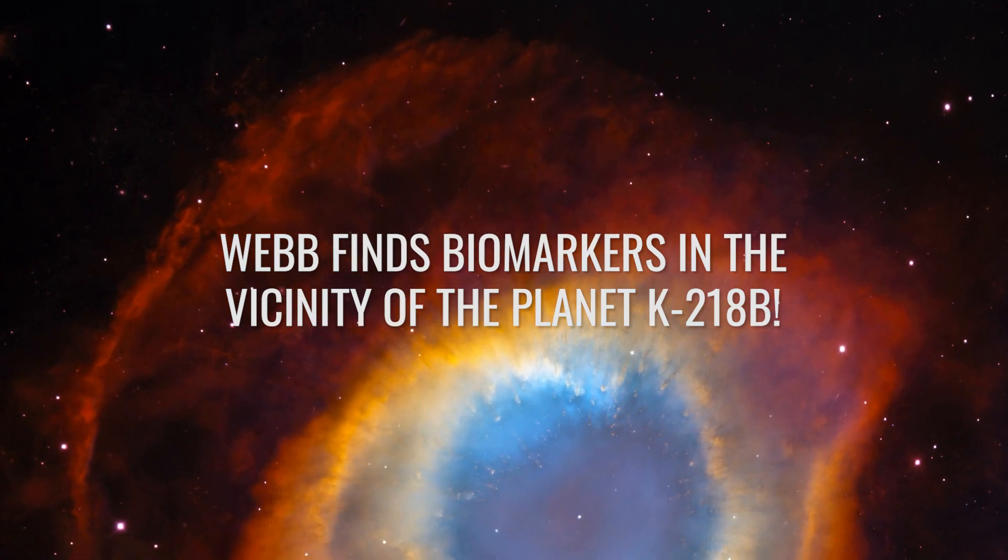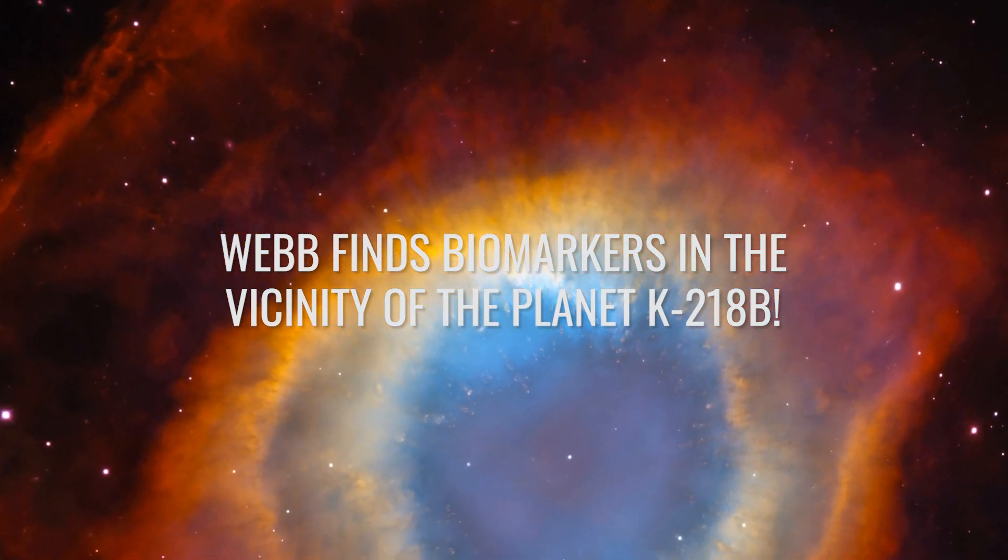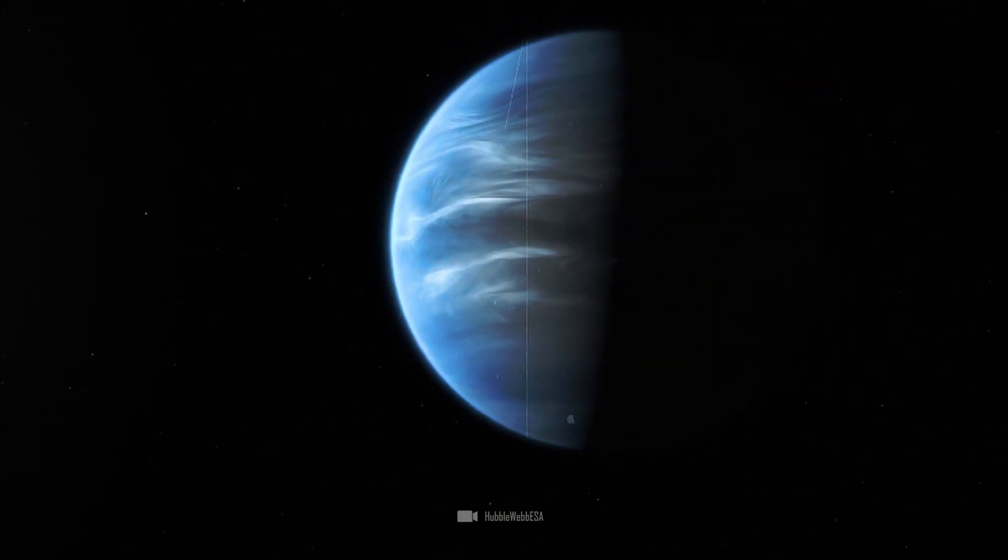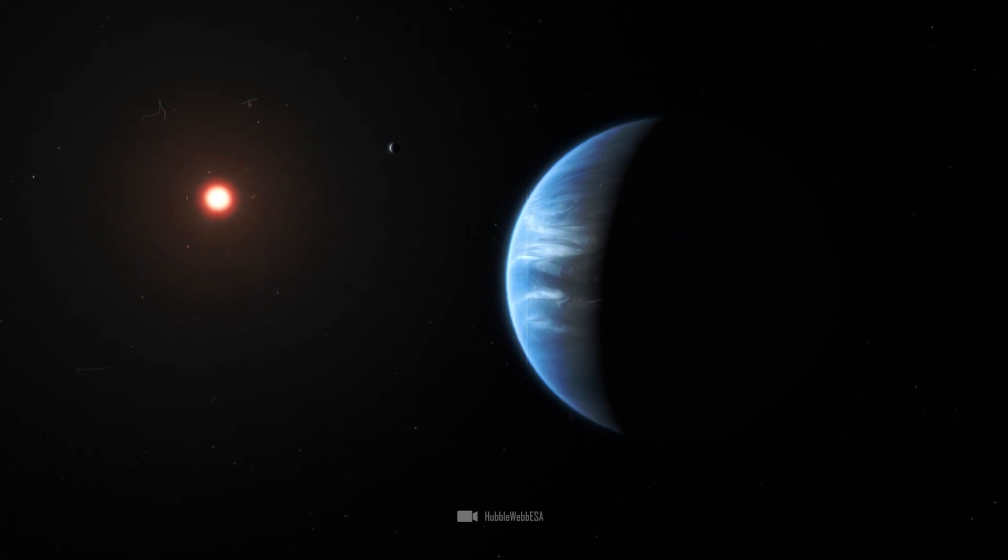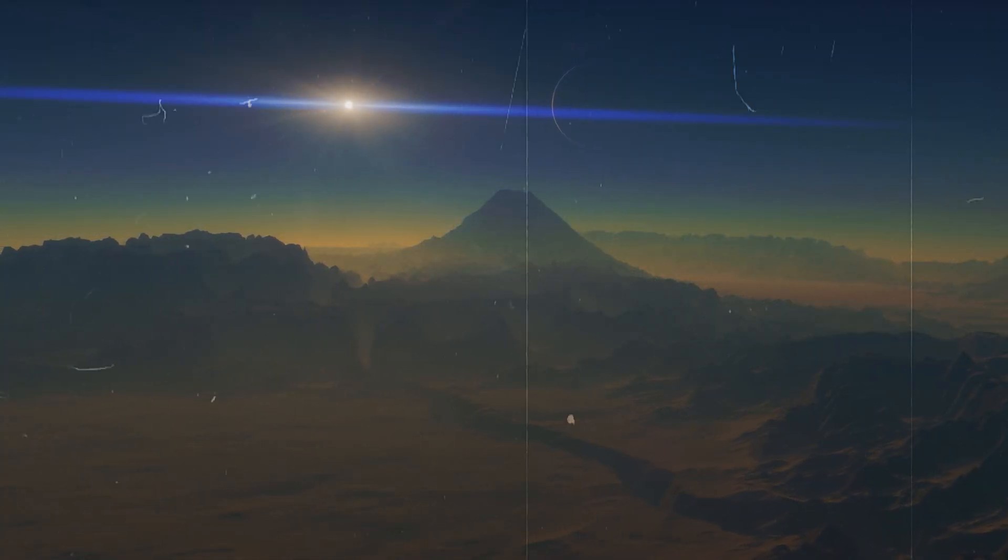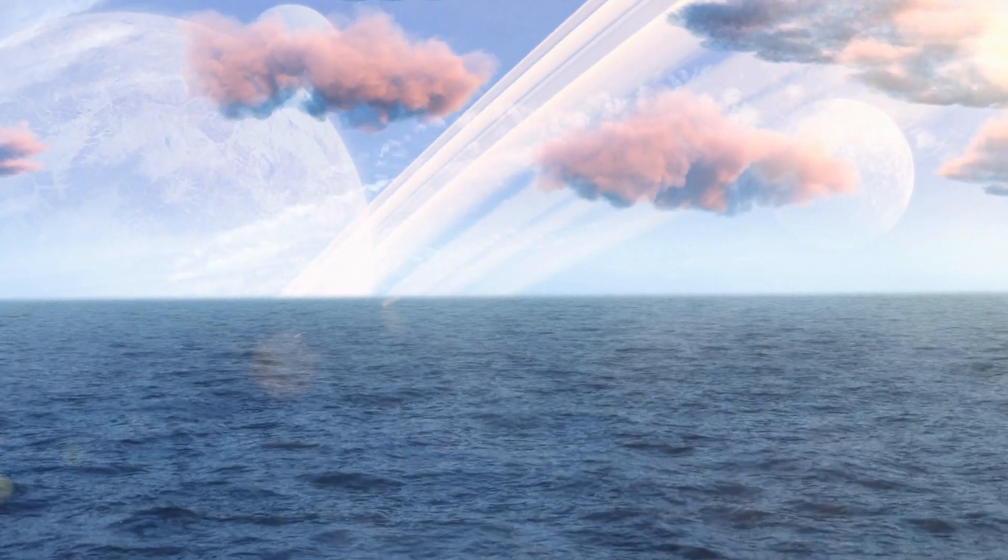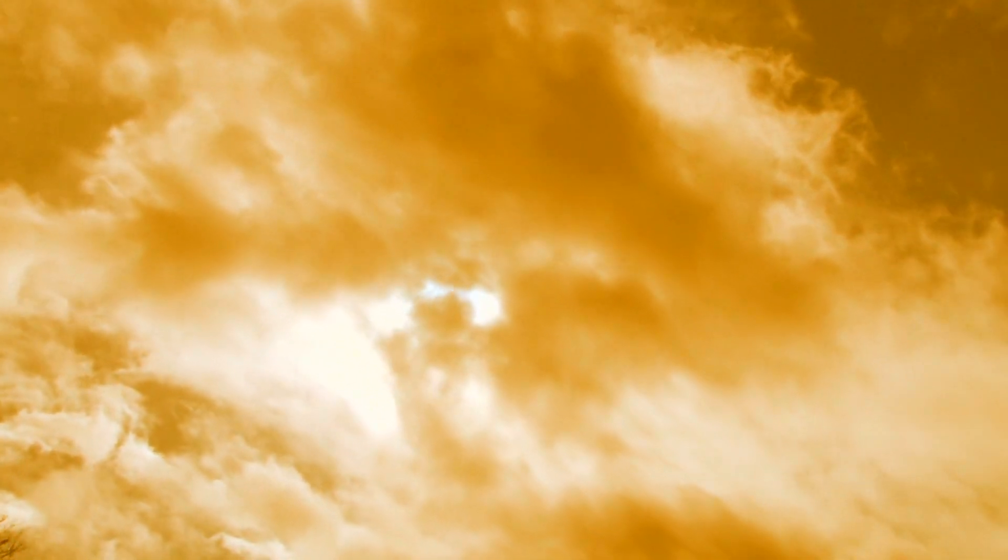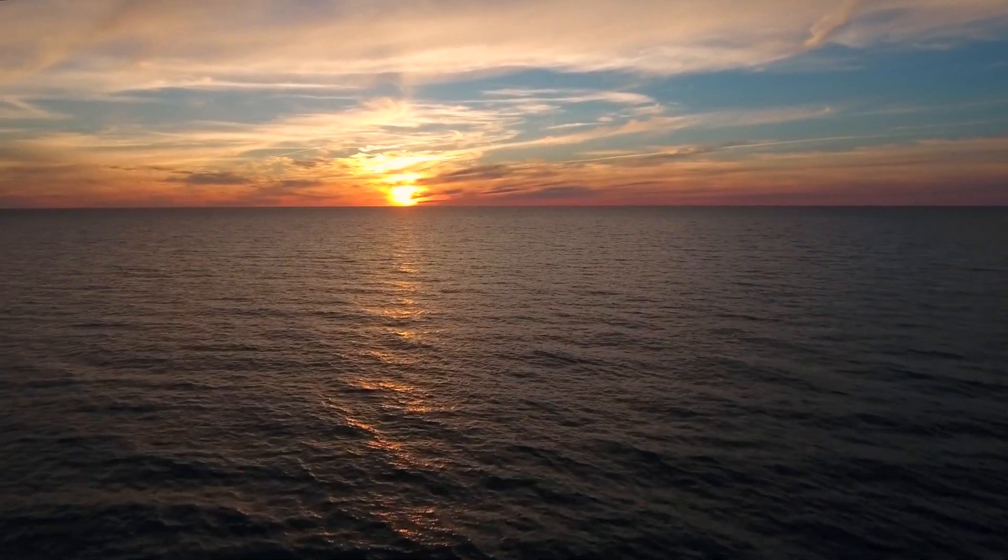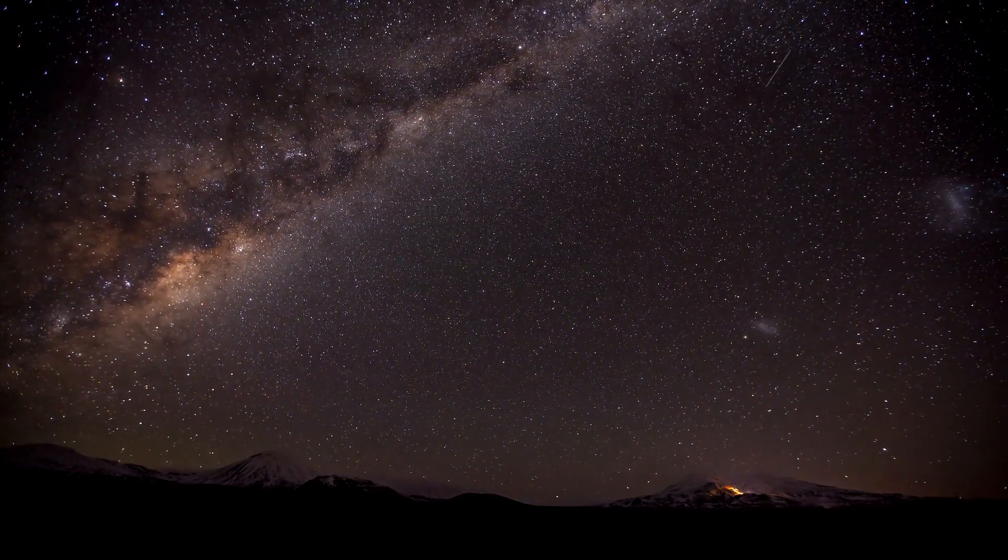K218b is an exoplanet located about 124 light-years from Earth in the constellation Leo and has proven to be a promising target in the search for extraterrestrial life. K218b orbits the red dwarf star K218 and is clearly in the habitable zone of its star. This means that the planet could have liquid water on its surface, which is a prerequisite for the emergence of life. One of Webb's most remarkable discoveries was the real presence of hydrogen and water vapor in the planet's atmosphere. This is of great significance as water is the crucial element for life. The telescope's ability to analyze in detail the atmosphere of such a distant planet is an unprecedented scientific breakthrough.